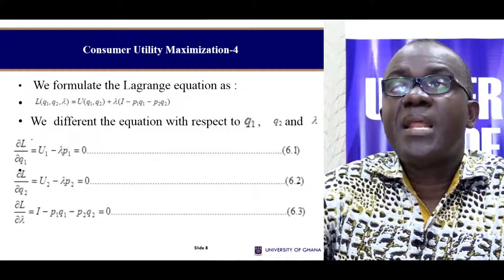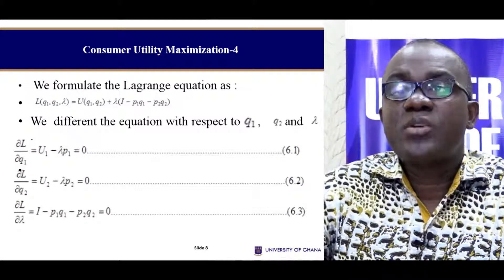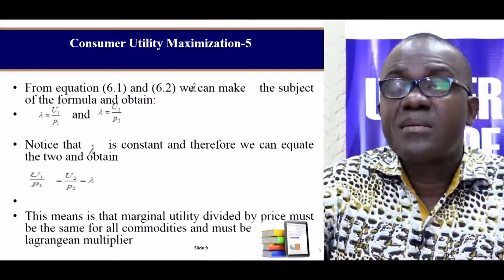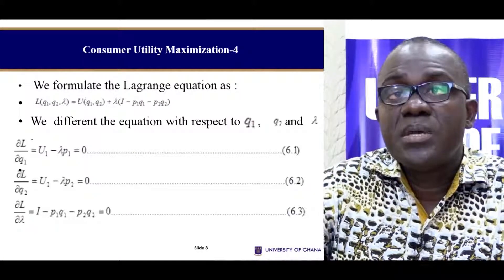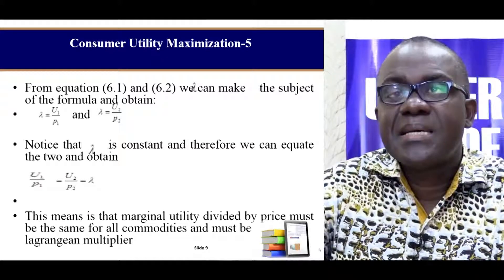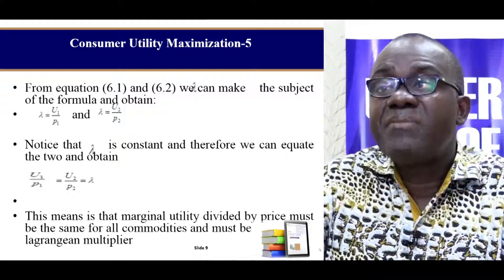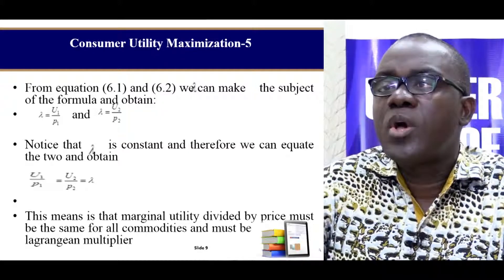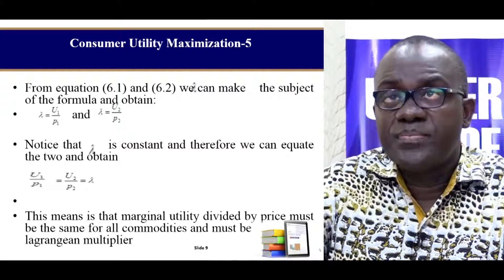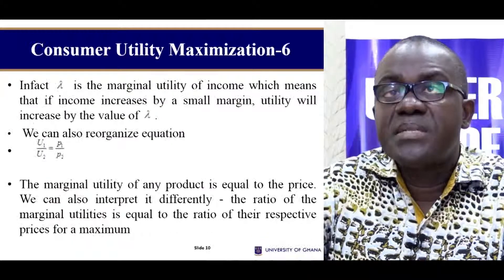To do this, we form our Lagrangian. This is the objective function, this is our constraint function, and then we take the first-order derivatives. What happens is that we can manipulate the first-order equations. From these equations, we can have this relationship, and we can also have this relationship that tells us that our lambda is always a constant. The marginal utility divided by the price must be the same for all commodities and must be equal to lambda.